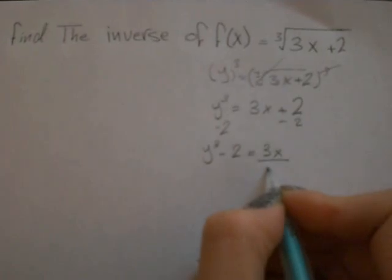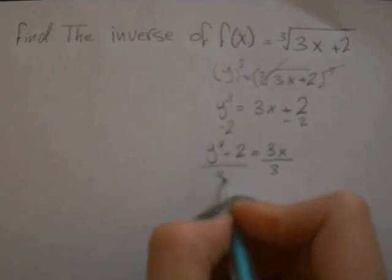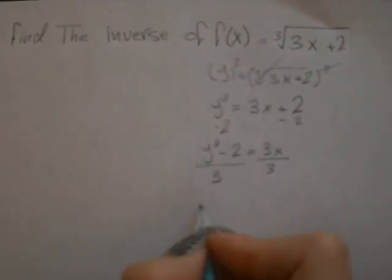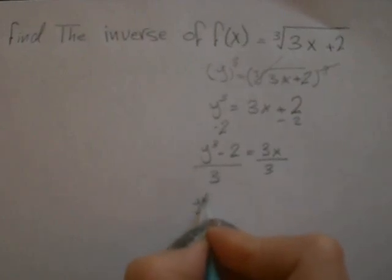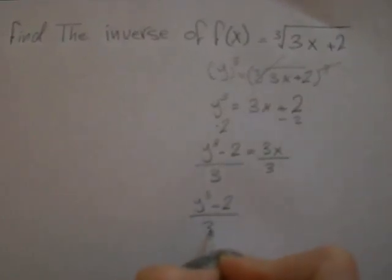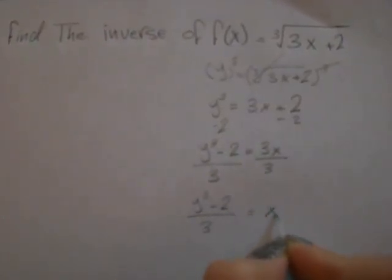Now I will divide by 3 so I can get the x by itself. y cubed minus 2 divided by 3 equal x.